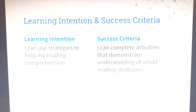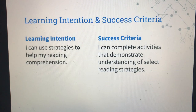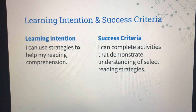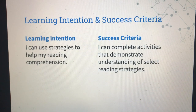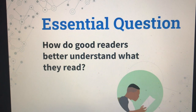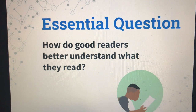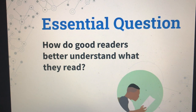Okay, making inferences. Your learning intention is that you can use strategies to help your reading comprehension, just like the three we have already learned about. Success is that you can complete activities that demonstrate your understanding of select reading strategies. How do good readers better understand what they read? You learn about your reading strategies and put them into effect. Whether you're summarizing, identifying conflict and resolution, using sequencing to understand the order of events, or making inferences — which is what we're doing today — these all help you understand what you're reading.